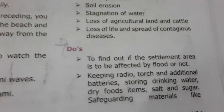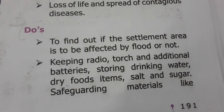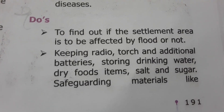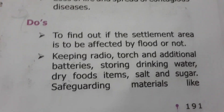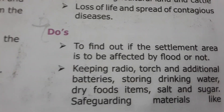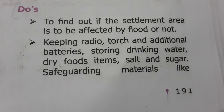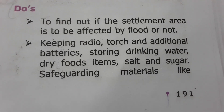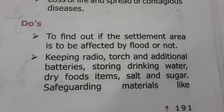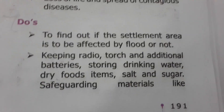Do's during a flood: First, find out if your settlement area is likely to be affected by flood. Keep a radio, torch, additional batteries, stored drinking water, dry food items, salt, and sugar. Also keep safeguarding materials ready.